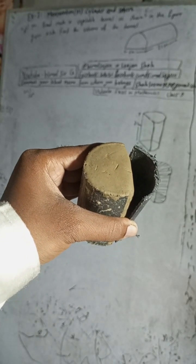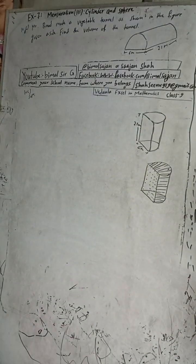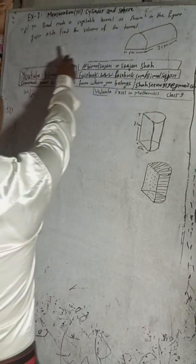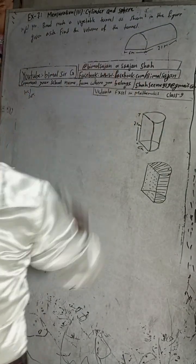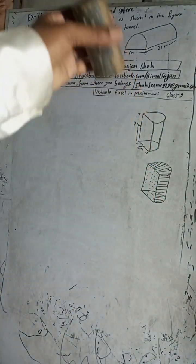The question is: Mr. Vinod made a vegetable tunnel as shown in the figure. Find the volume of the tunnel.